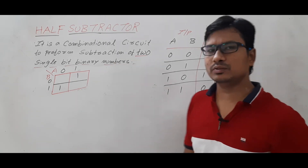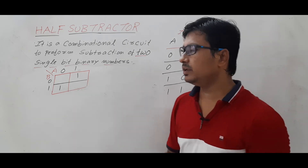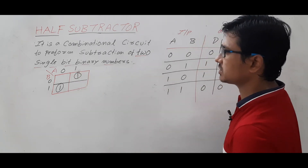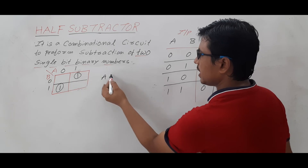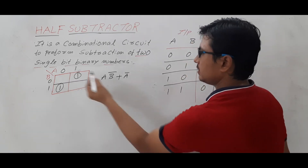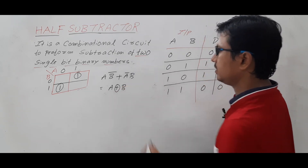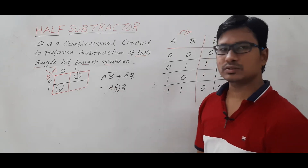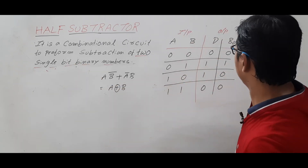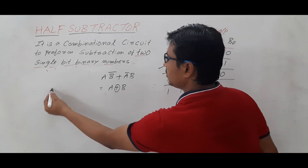Since the minterms are not adjacent, I consider each one as unique. Position 10 gives the expression A·B', and position 01 gives A'·B. This can be written as A XOR B. For the borrow K-map, there is only one minterm, so the borrow expression is A'·B.